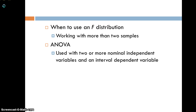We've switched the kind of distributions we're using to what's called an F-distribution, because now we're working with more than two samples. For all of those t-tests we just learned, we were talking about either using two samples or comparing a single sample with a population mean. When you're working with only two samples, you can use the t-distribution.